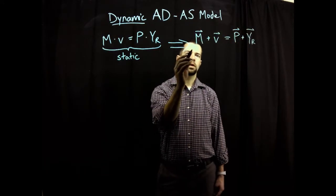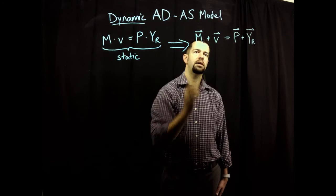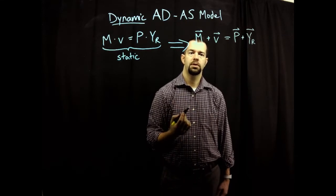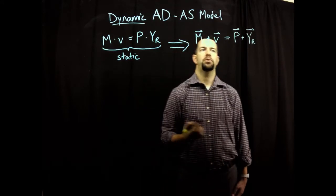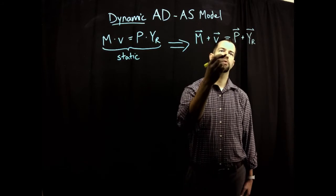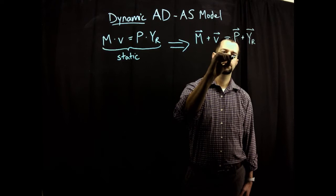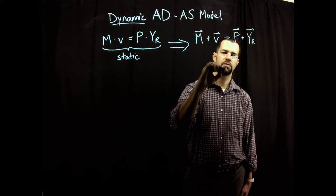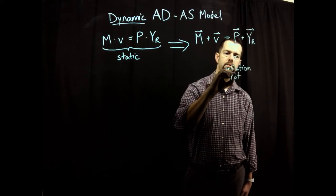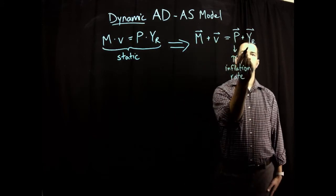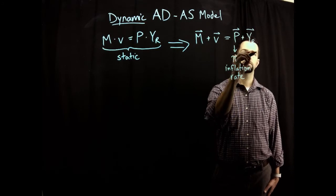The growth rate of M represents money supply growth. The growth rate of V represents growth in the velocity of money. The growth rate of P is the growth in the price level, which we can also denote as pi, representing the inflation rate. And YR is real GDP, which we can express as real growth.